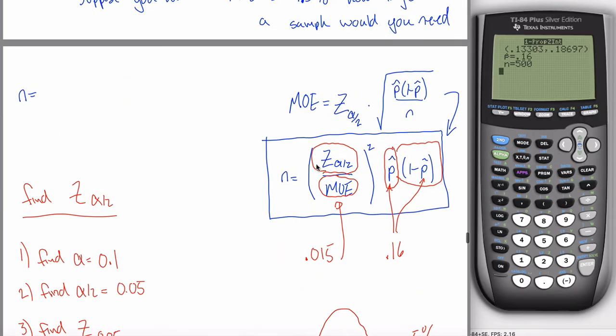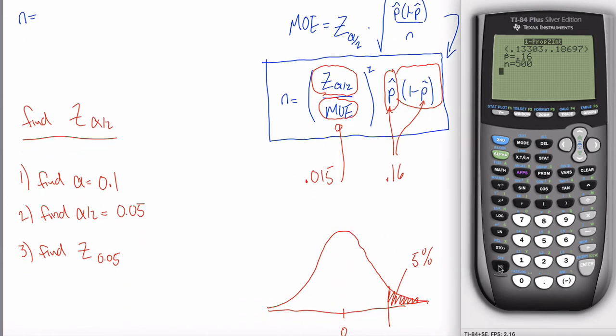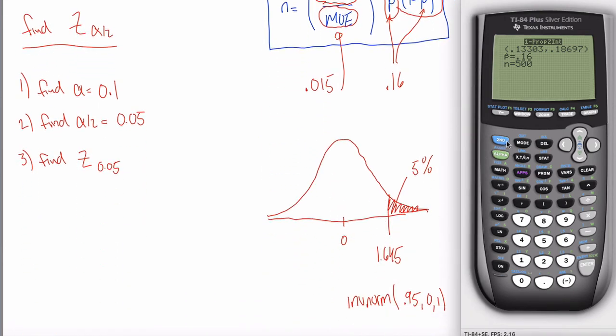That is Z sub alpha over 2. That is what's going to go into my formula right here. If you have that, you have all the pieces of your formula. Let me first show you the inverse norm part. Inverse norm is under the distribution menu in your calculator, second then variables. Third thing listed says inverse norm. The area to the left of the point I'm looking for is what it wants, and that's 0.95. The center that I want, be careful, it's 0. It's not 0.16 because I want the Z score, not a proportion. So it's a 0 and the spread is a 1. If I hit enter, it spits out this number, which rounds to 1.645.